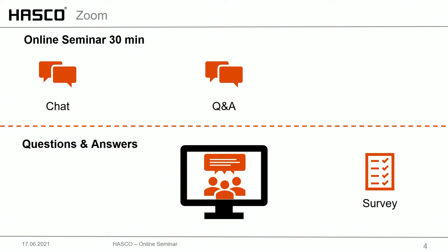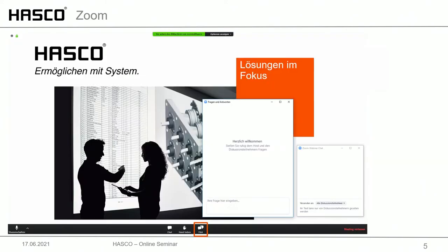As usual we are available in the chat for you during the whole session and some minutes after it. Please use the Q&A tool to send us questions during the session, and at the end we will try to answer them live. The Q&A tool is in the bottom line of Zoom — you'll find two speech bubbles there; click on that and a window will open where you can fill in your questions. It makes it much easier for us to handle compared to the chat.